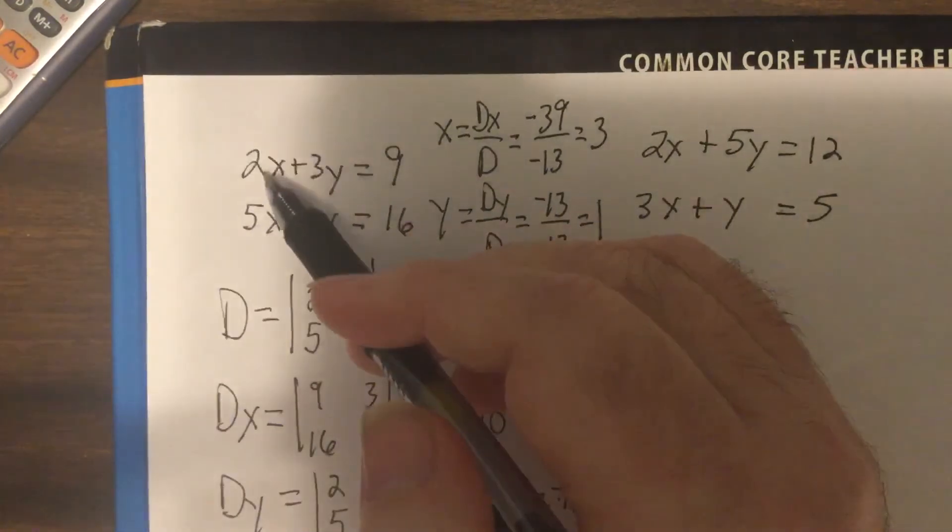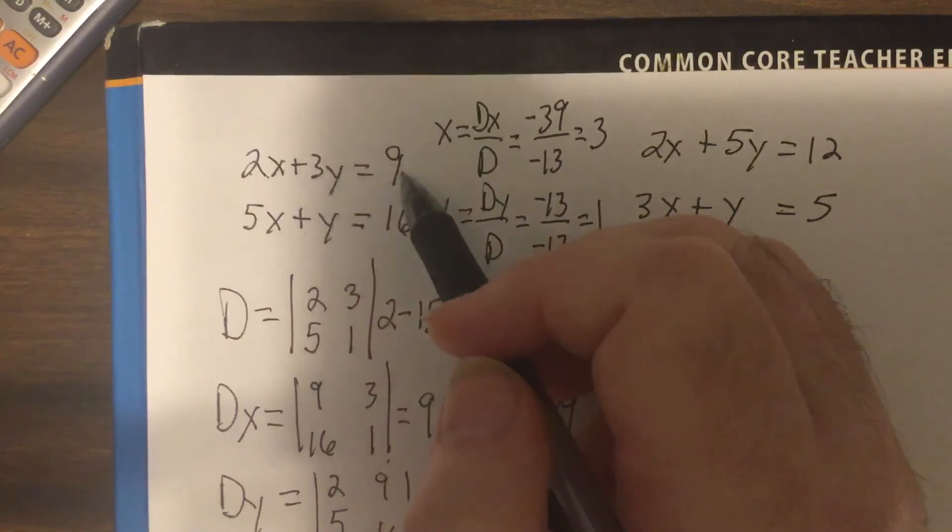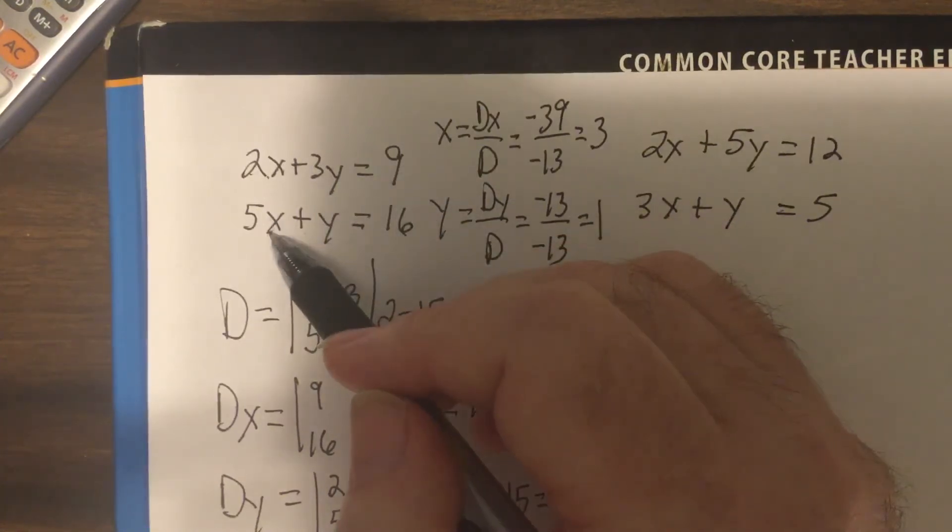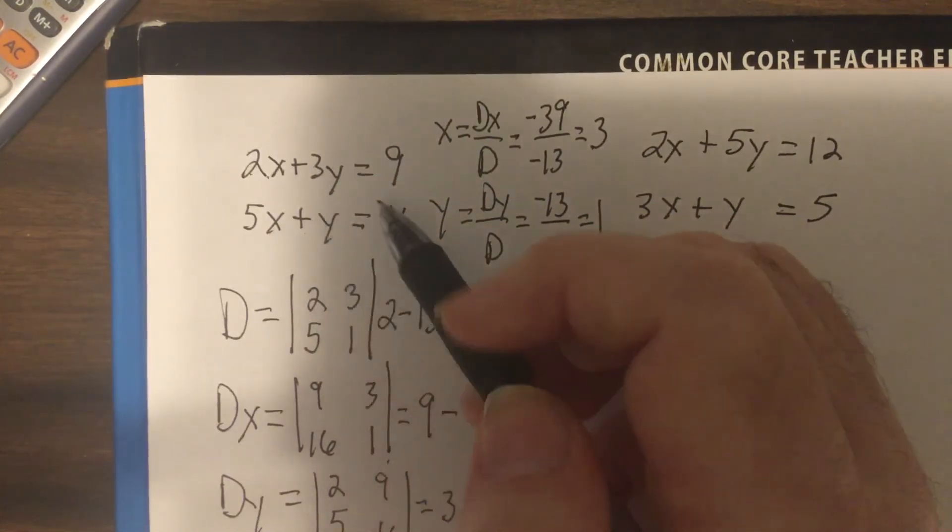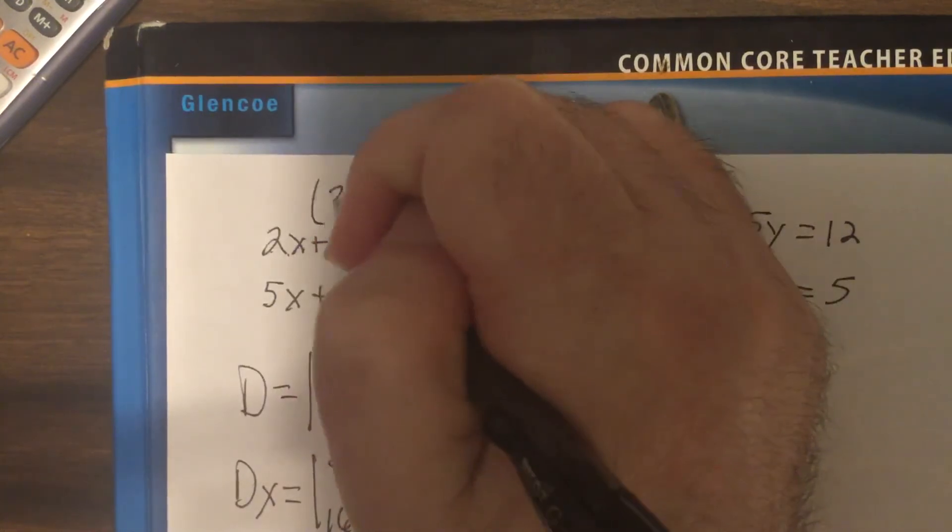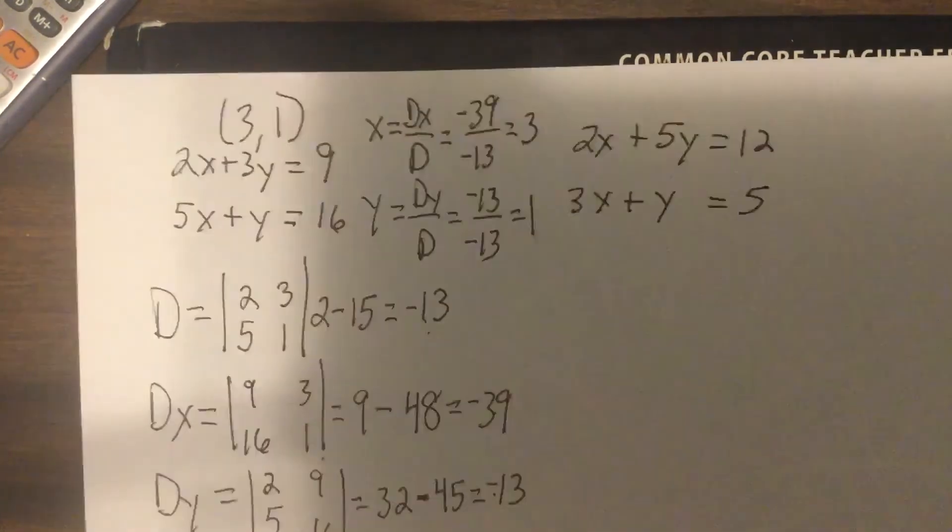So let's try it. 3 times 2 is 6, plus 3 times 1 is 3. 6 plus 3 is 9. 3 times 5 is 15, plus 1 is 16. So the answer is 3, 1.